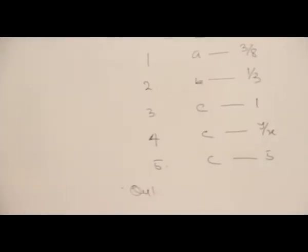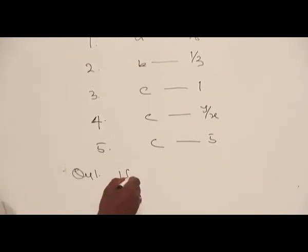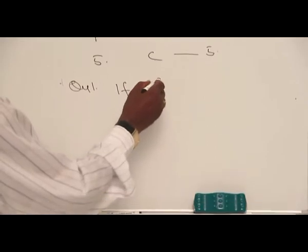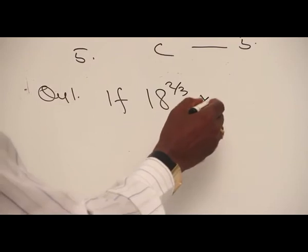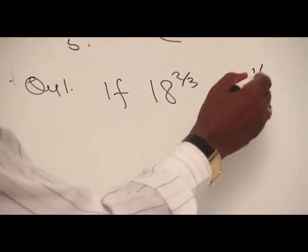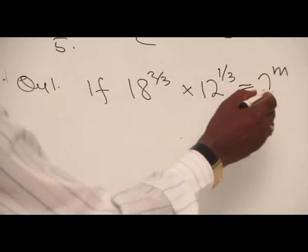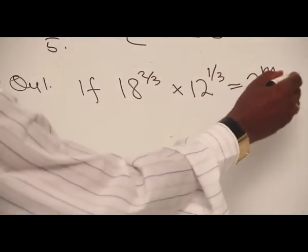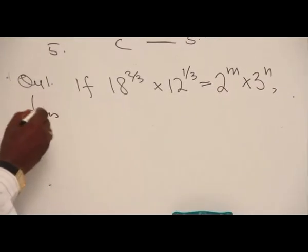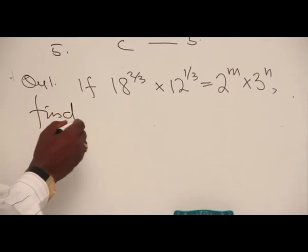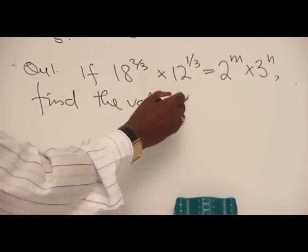Question 1. If 18 to the power of 2 over 3 times 12 to the power of 1 over 3 is equal to 2N times 3N, find the value of N.